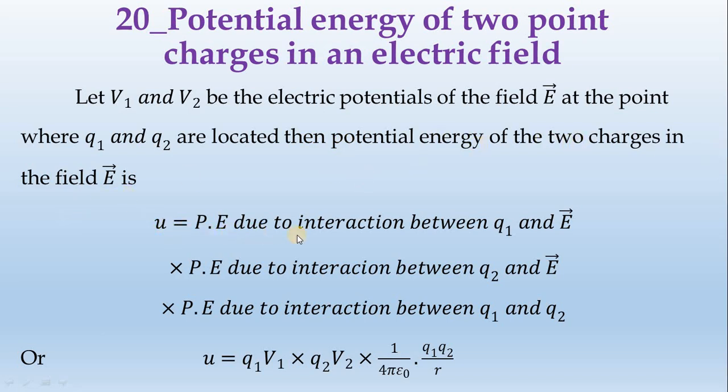U is equal to potential energy due to the interaction between the charge Q1 and electric field E, then potential energy due to the interaction between the charge Q2 and electric field E, and potential energy due to the interaction between the charge Q1 and Q2.